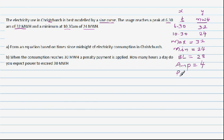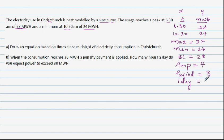Now we can find the period. From maximum to minimum is half a period. From 6:30 to 10:30 is 4 hours, so the full period is 8 hours. Within one 24-hour day, that gives us 3 complete cycles.